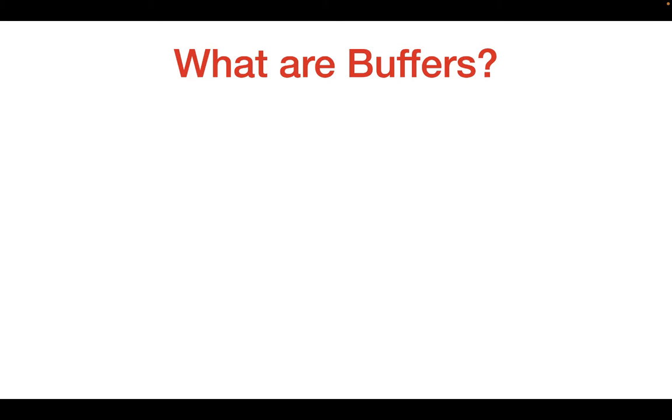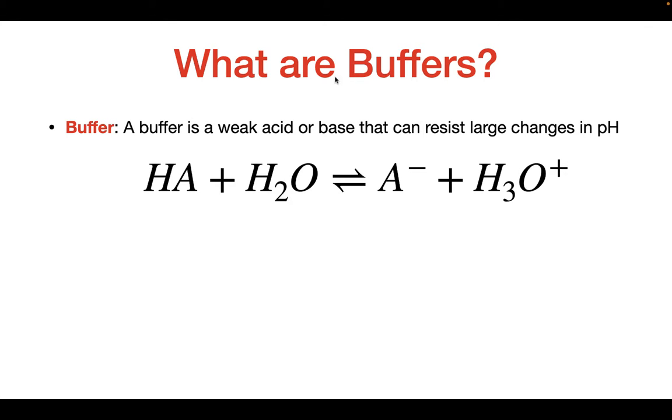I'd like to start off with what are buffers. Buffers are weak acids or bases that can resist large changes in pH. Buffers typically have this generic formula where you have a weak acid that is in equilibrium with its conjugate base or vice versa. These weak acids and bases don't fully dissociate like a strong acid would, so therefore they're in equilibrium.